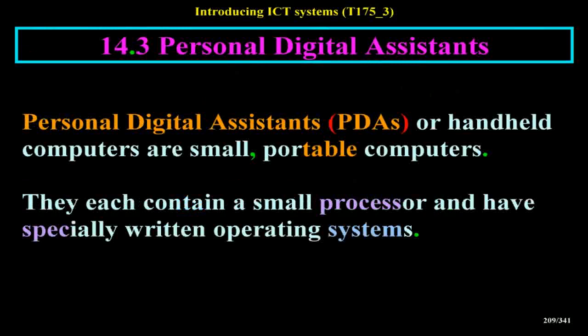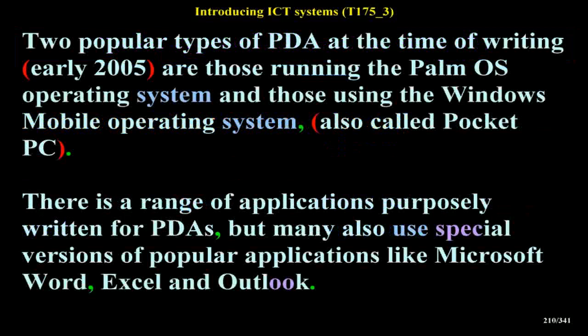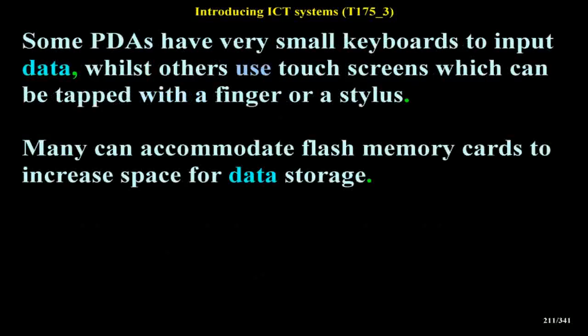Personal digital assistants (PDAs) or handheld computers are small, portable computers. They each contain a small processor and have specially written operating systems. Two popular types of PDA at the time of writing (early 2005) are those running the Palm OS operating system and those using Windows Mobile, also called Pocket PC. There is a range of applications purposely written for PDAs, but many also use special versions of popular applications like Microsoft Word, Excel and Outlook. Some PDAs have very small keyboards, whilst others use touchscreens which can be tapped with a finger or a stylus.